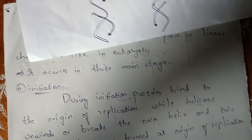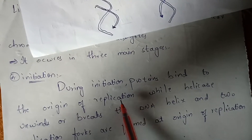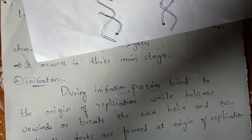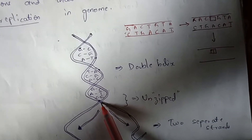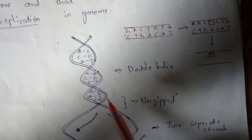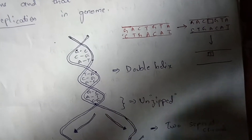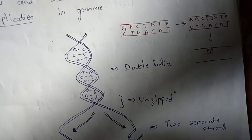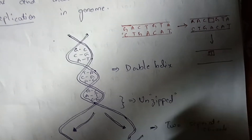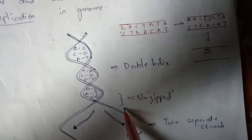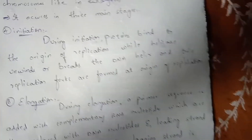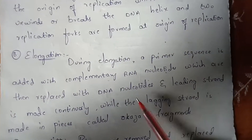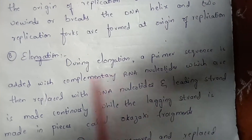Initiation is mainly done with the help of proteins which bind to the origin of replication, also known as the ori site. The proteins bind to the ori site and help in breaking the hydrogen bonds between the nucleotides. Then separation of strands takes place — the double strand gets converted into single strands. This phenomenon is known as initiation.